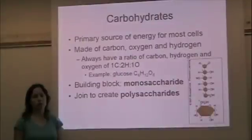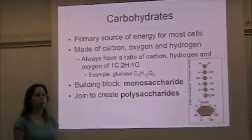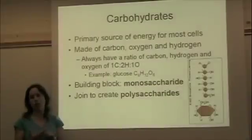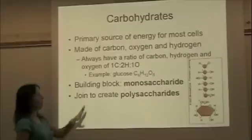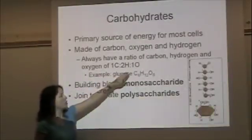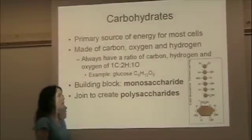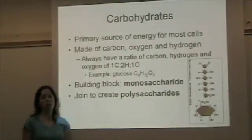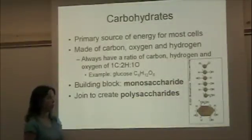Carbohydrates are an energy source for cells — glucose, for example. Carbohydrates only have carbon, hydrogen, and oxygen; they never have nitrogen or phosphorus. They always have a ratio of one carbon to two hydrogens to one oxygen. So glucose is C6H12O6 — there are twice as many hydrogens as there are carbons and oxygens.